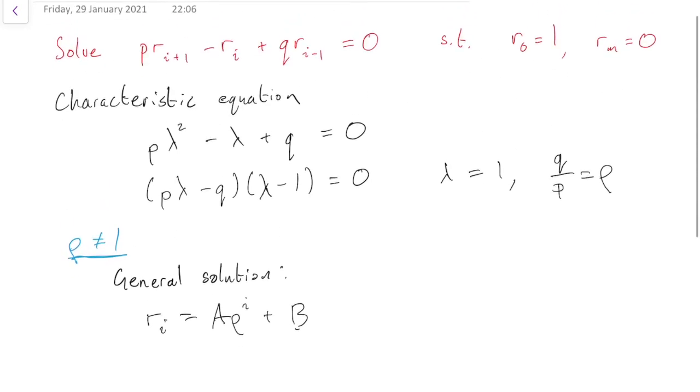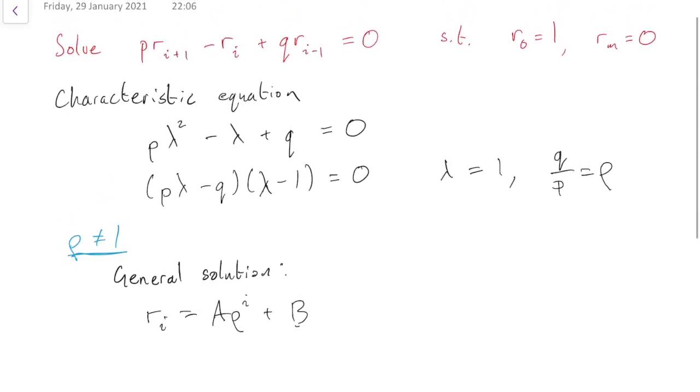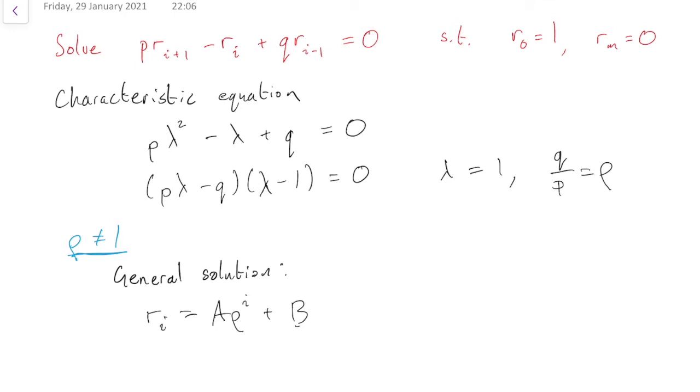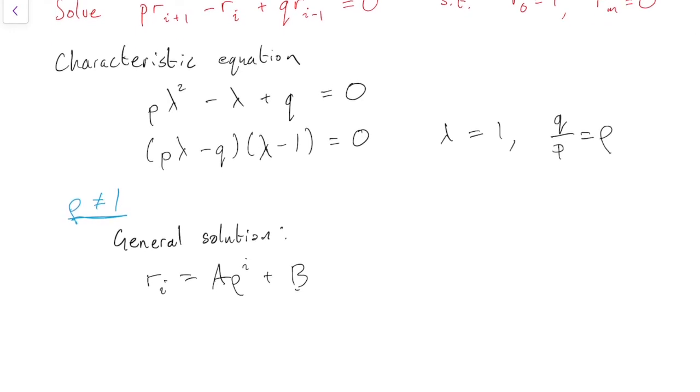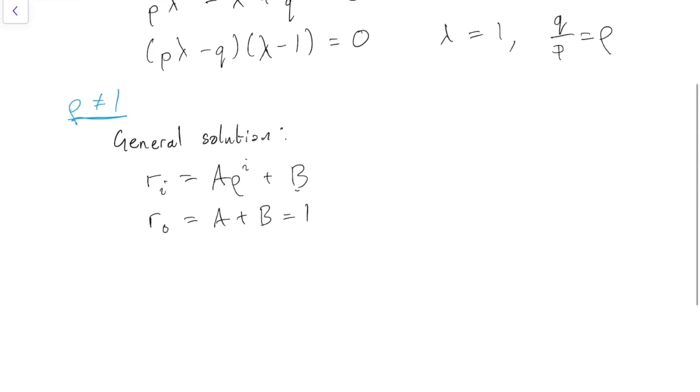And now we need to use these two conditions, these boundary conditions on r0 and rm to solve it. So those conditions are r0, which is a plus b equals 1, and rm equals 0. rm is a rho to the m plus b, and that has to be 0.